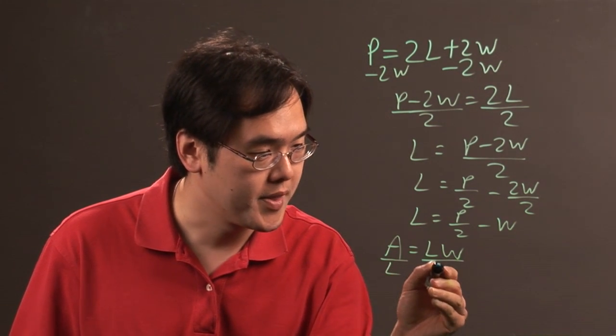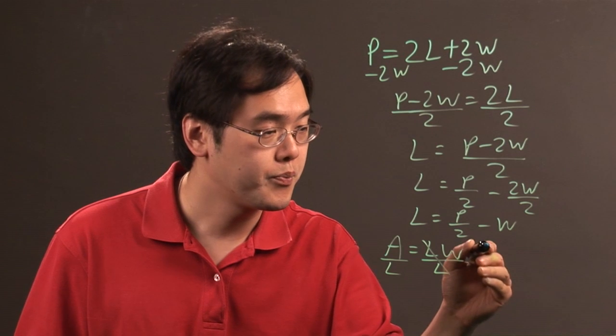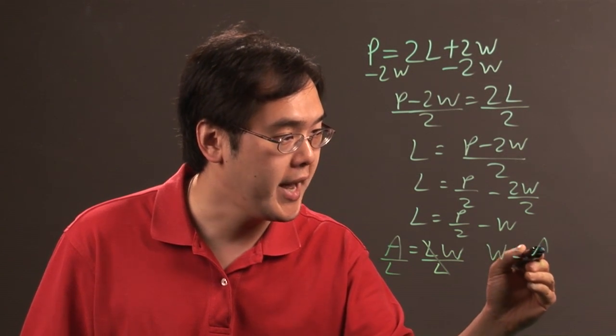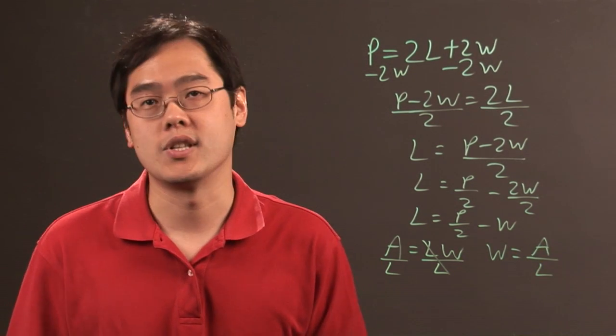So divide both sides by the length, the lengths cancel. So you have w is equal to a, which is the area, divided by the l, which is the length.